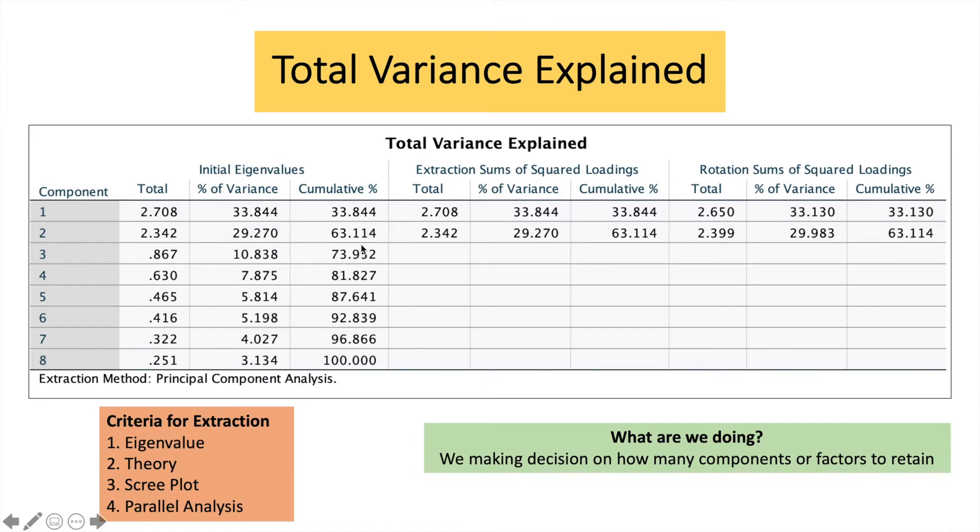So what is this 63 trying to tell you? Rather than focusing over here, I would look over here, which is the total variance explained. The total variance explained is 63%. So what are we trying to say? We are trying to say we have reduced the eight components here to only two, but we are still able to retain 63% of the information, which is the total variance explained.